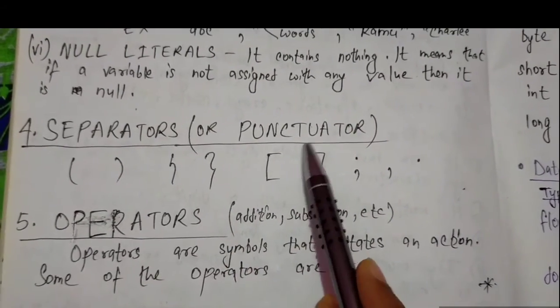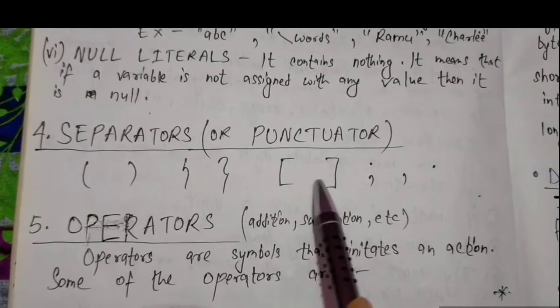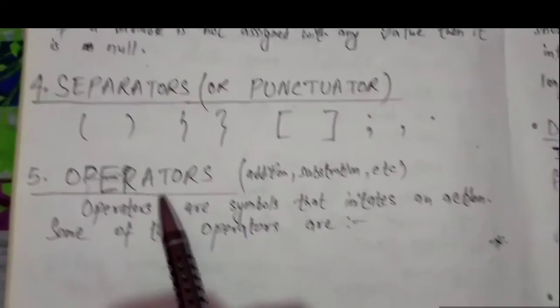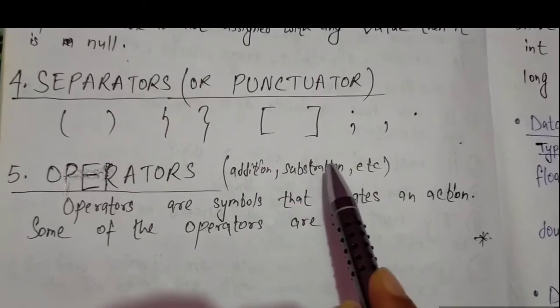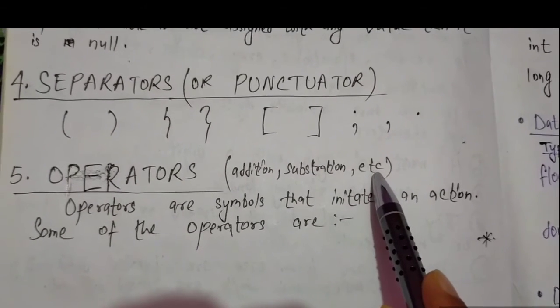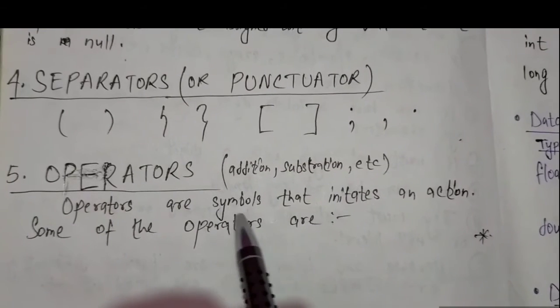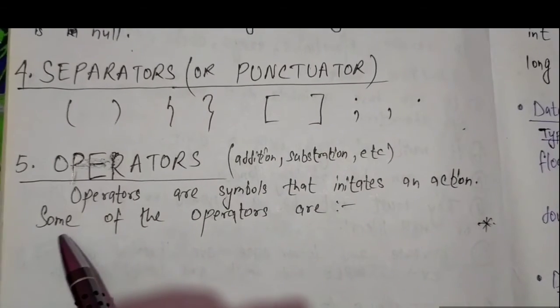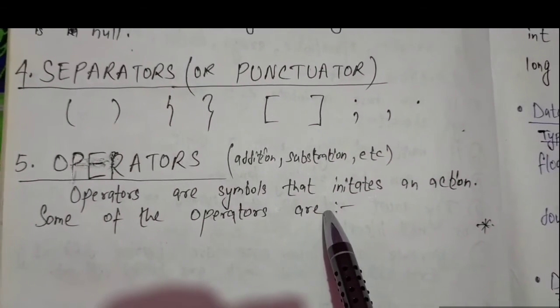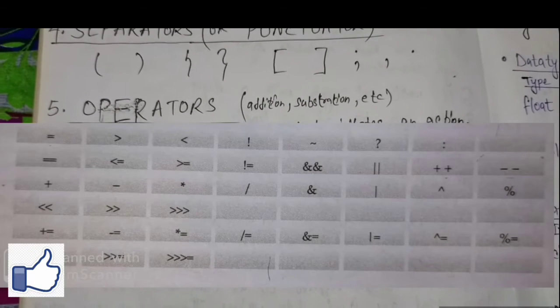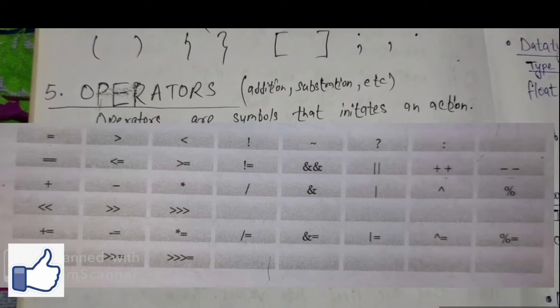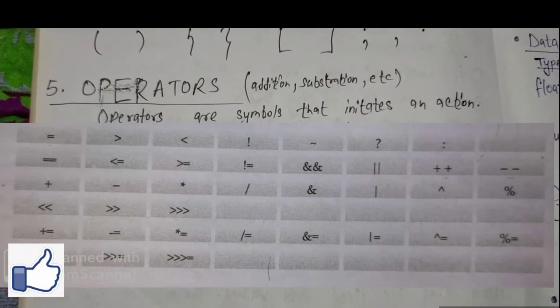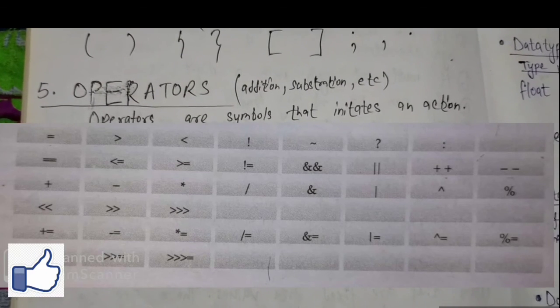Now separators - these are symbols in programming that have some special meaning. Operators are something like addition, subtraction, and many more things like logical gates. Separators are symbols that initiate action. On this screen you can see some operators and examples. If you like this video, please share it, like it, and subscribe to the channel. Thank you for watching the video.